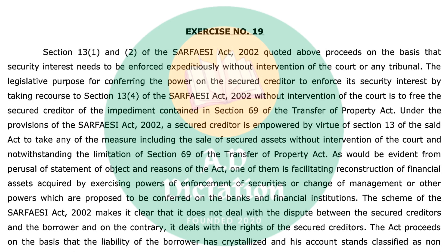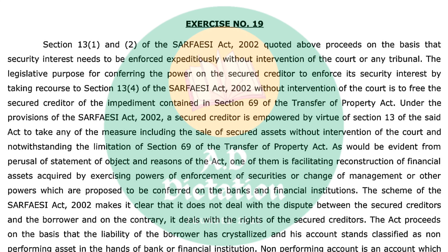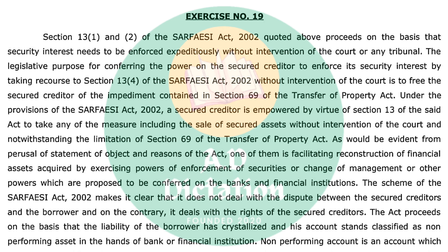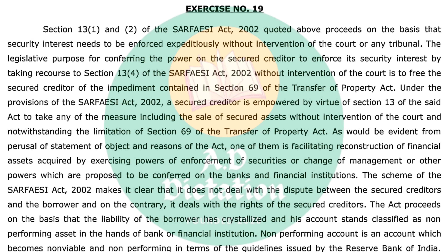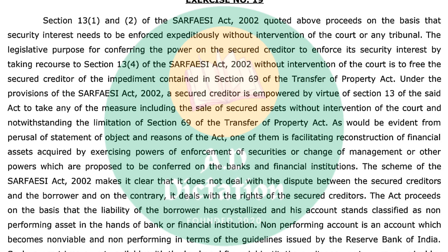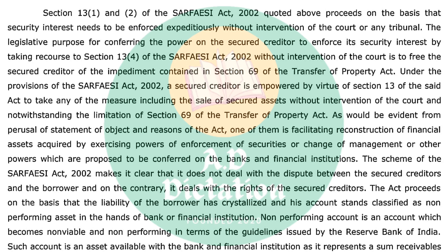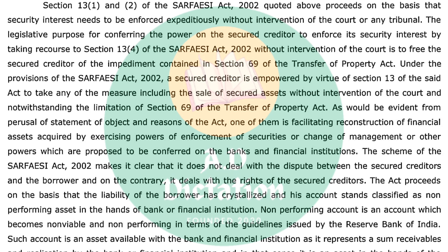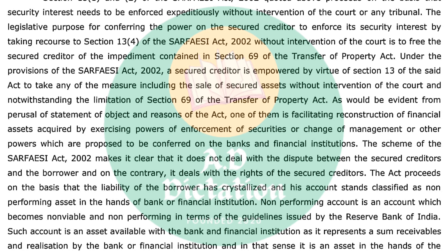Of the impediment contained in Section 69 of the Transfer of Property Act. Under the provisions of the SARFAESI Act 2002, a secured creditor is empowered by virtue of Section 13 of the said Act to take any of the measures including the sale of secured assets without intervention of the court, and notwithstanding the limitation of Section 69 of the Transfer of Property Act, as would be evident from perusal of statement of objects and reasons of the Act.